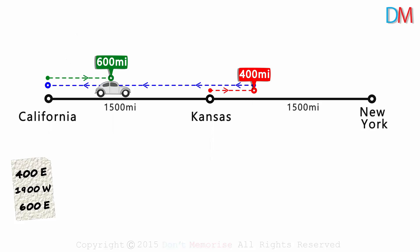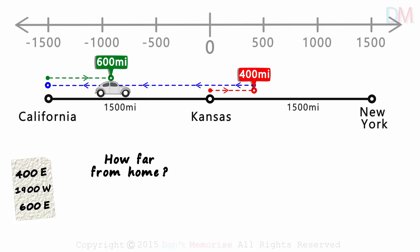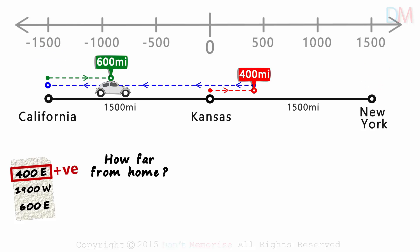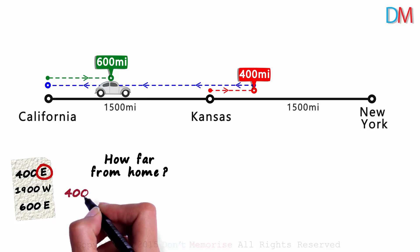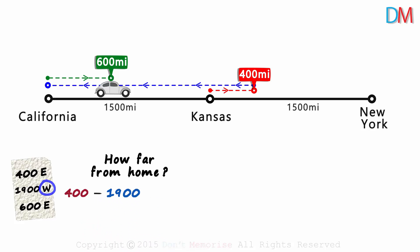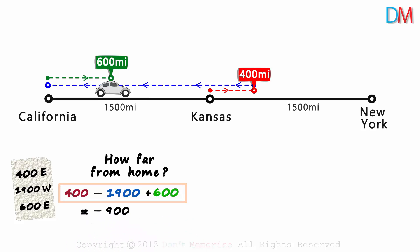Let's talk about the first question: where are you relative to Kansas? Think of this as a number line in which east is positive and west is negative. 400 miles to the east will be positive 400. Then 1900 miles to the west would be negative 1900. And 600 miles to the east would be positive 600. So we write: 400 minus 1900 plus 600, which gives us minus 900. The minus means west — so your relative position will be 900 miles to the west of Kansas.